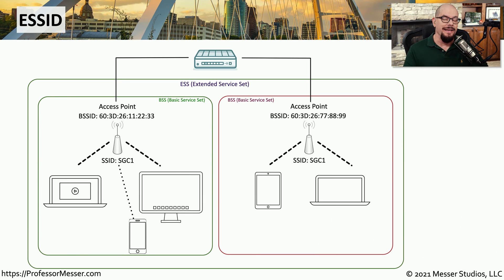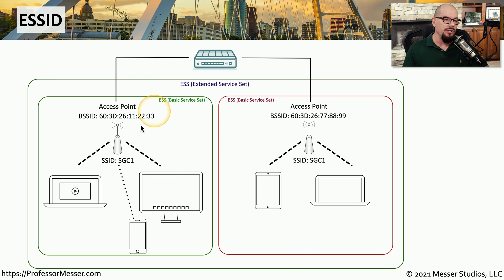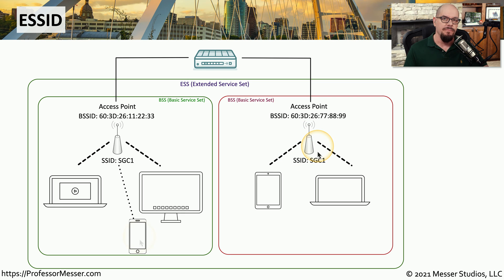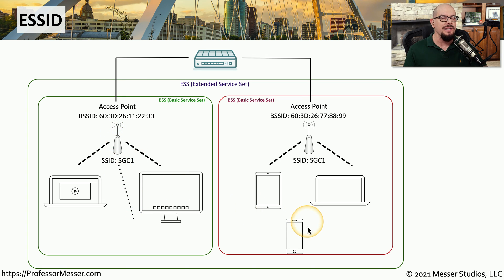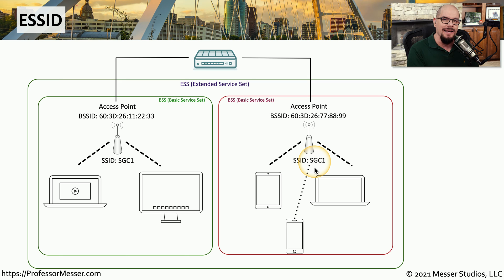Here's a simple design of an ESSID in action. A network switch at the top connects to two different access points with very different BSSIDs and MAC addresses. Although these are two separate physical devices, they both share the same SSID. If you walk to the other end of the building, you'll find you no longer have connectivity to the original access point, but there's an access point closer to you with the same SSID. Your device will automatically connect to it because it has exactly the same configuration as the ESSID you were originally connected to.